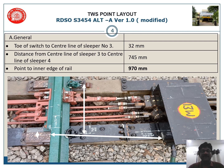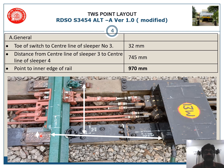This presentation mainly deals with installation practices. Let me give you the different measurements you need to check when installing the point machine at the initial stage. Toe of switch to center line of sleeper number 3 should be 32 mm. The toe is the end of the tongue rail and center line of sleeper number 3 — this distance is 32 mm.